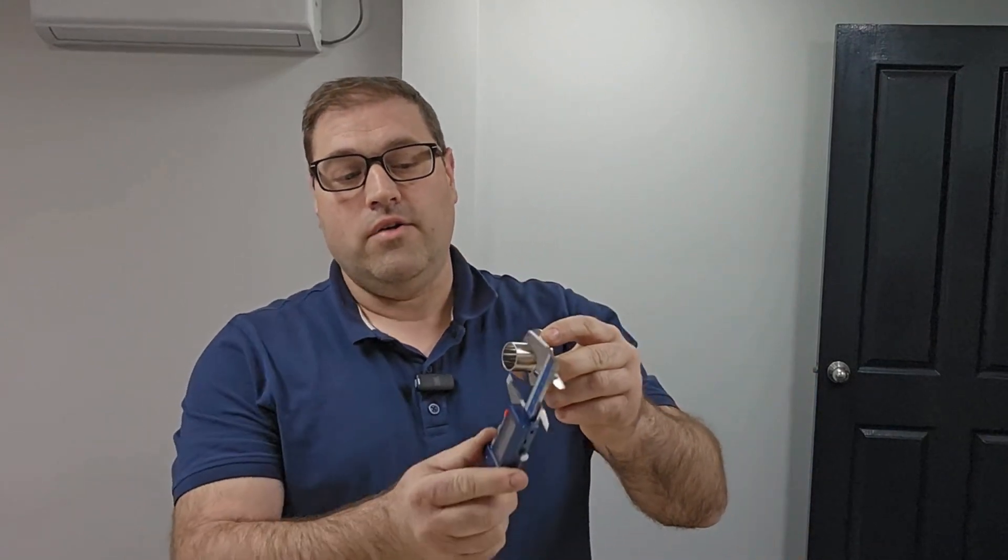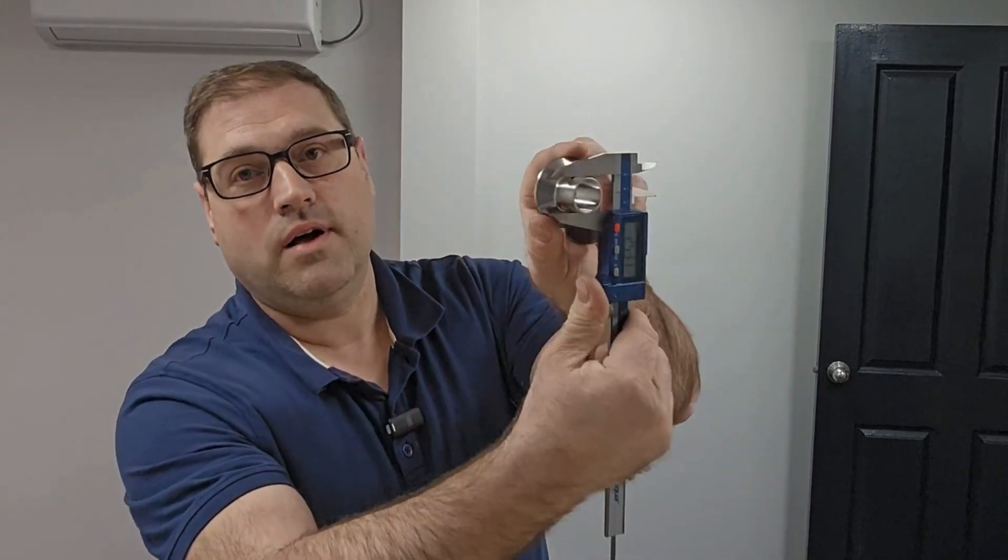The correct way to measure your triclamp is by measuring behind the flange on the tube part of the triclamp, like so.